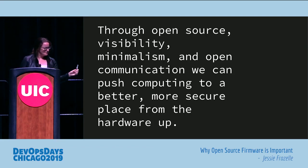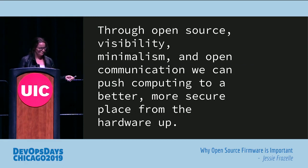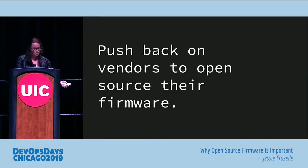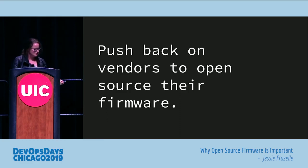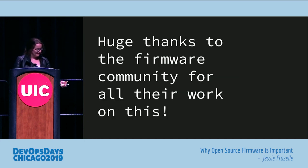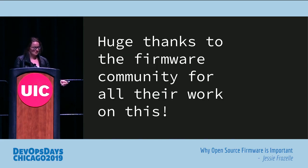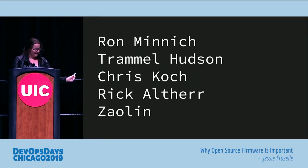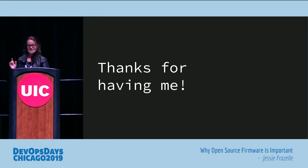To wrap up: through open source, visibility, minimalism, and open communication, you can push computing to a better, more secure place from the hardware up. We can't keep building on top of broken foundations — someone needs to really care about these base layers. You can help push back on vendors to open source their firmware. If your organization buys a lot from them, you'll have more leverage than the rest of us. Huge thanks to the firmware community — Ron Minnick, Trammell Hudson, Chris, Rick, and Zaolin — all of them have great talks online if you want to dive deeper. Thank you for having me.